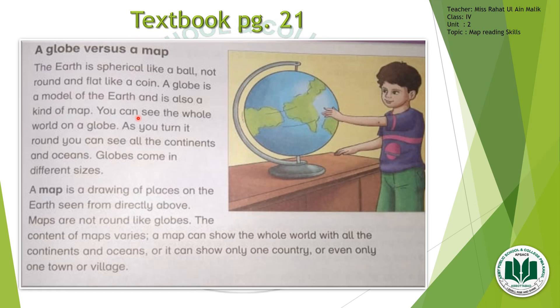This is page number 21 of your textbook. The subtopic on this page is A Globe versus A Map. While we were defining a globe, we studied that a globe is a spherical or round object like Earth. The Earth is spherical like a ball — it is spherical in shape, not round and flat like a coin. A globe is a model of the Earth.